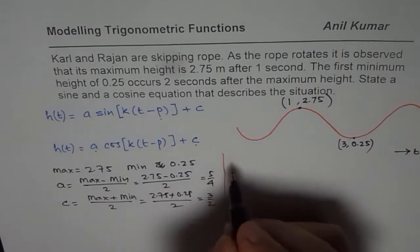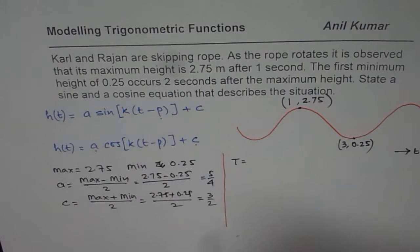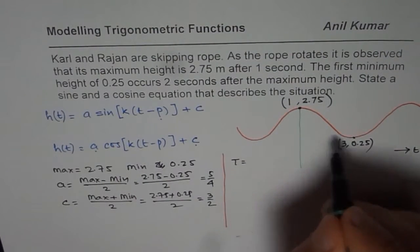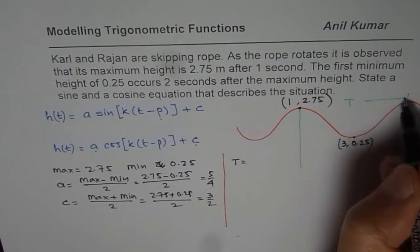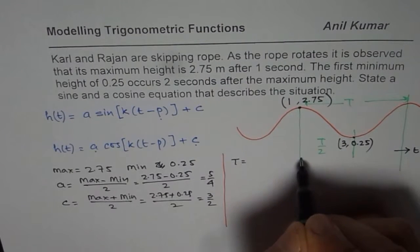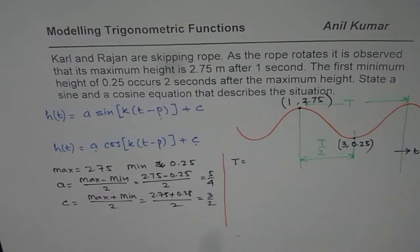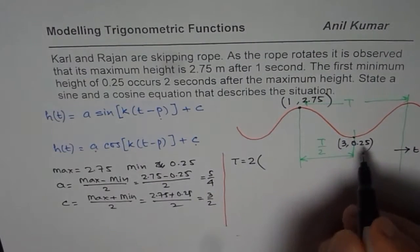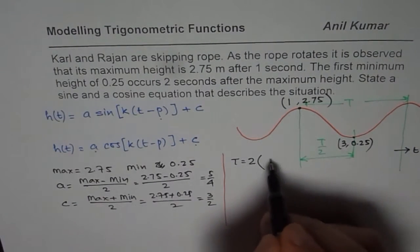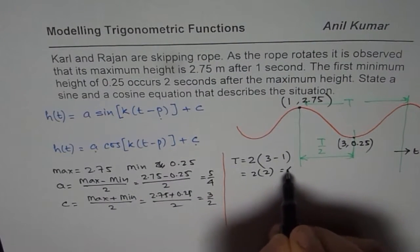Let us find what is the time period T. Now we are given separation of maximum and minimum, so we have half the time period. We have this is one full cycle, so that is T for us. This is T over 2, half the time period between these two. So our time period is 2 times the difference, which is 2 times 3 minus 1. We get a time period of 2 times 2, which is 4.